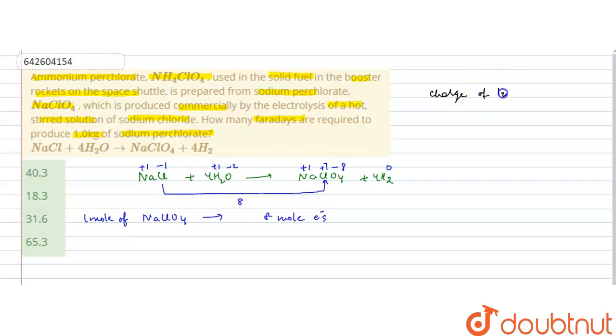Charge of one mole electron, that is one Faraday. It means for one mole of NaClO4, eight Faradays are required.